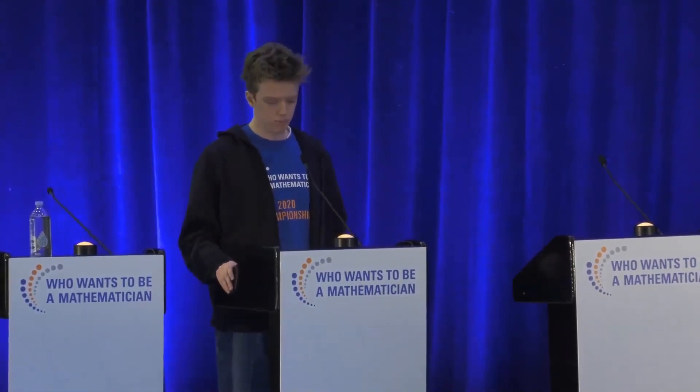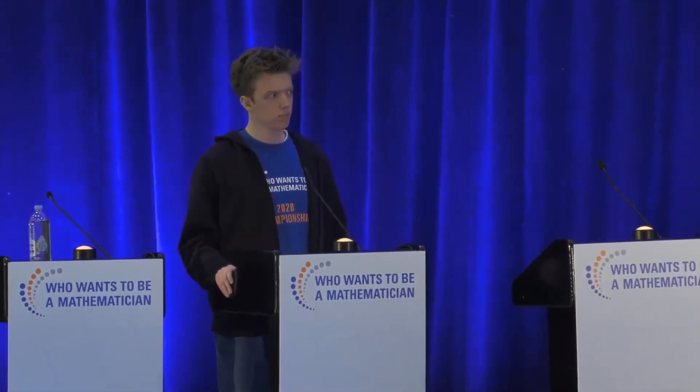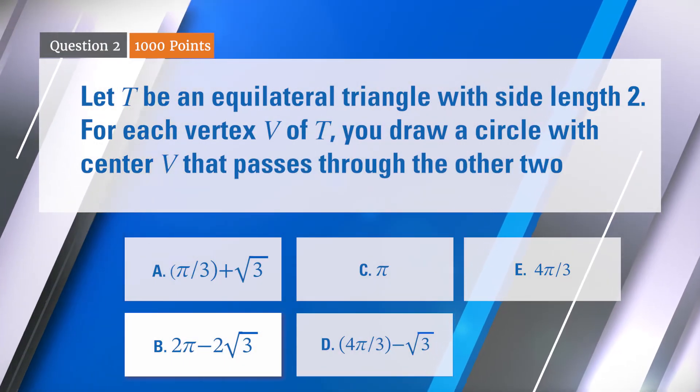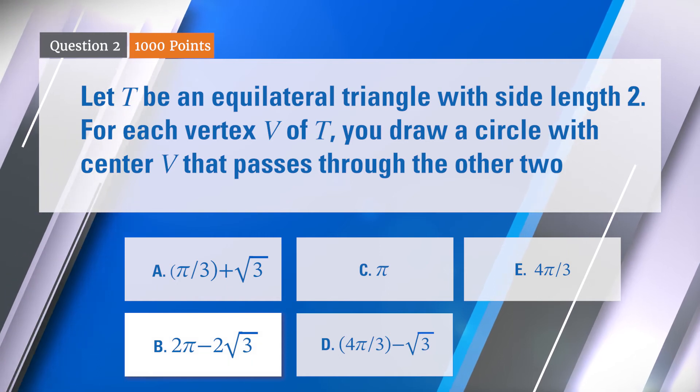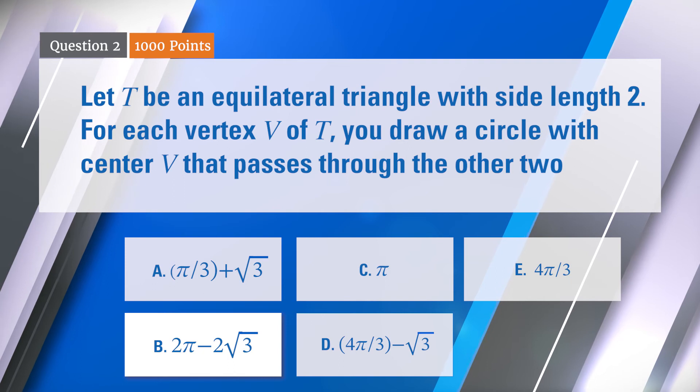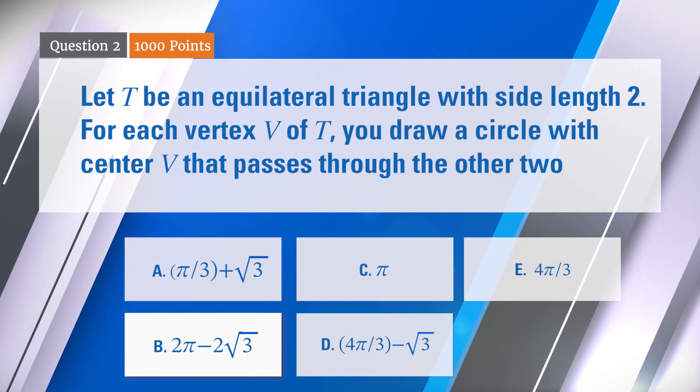Yes, and so it might look a little bit like a Wankel engine or something like that. And that's exactly right. That's what it turns out to be, and that's some fast figuring as far as I'm concerned, but it is 2π - 2√3, so we'll make it official in terms of being correct.